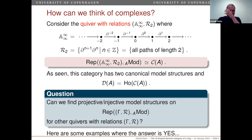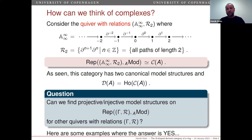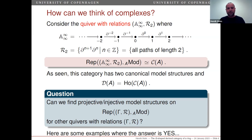Now you can imagine asking: suppose we start with some other quiver gamma equipped with some other relations R, and we look at the category of representations of this quiver with A-module values. Maybe this abelian category will somehow have one or two interesting model structures, and if so, we can then consider the associated homotopy category, which might also be interesting. This is somehow what the talk is about. Before I go to the mathematical details, I want to give you a couple of examples of specific quivers with relations to have in mind.